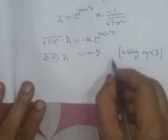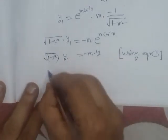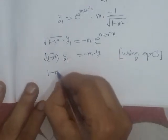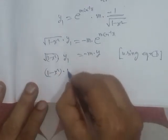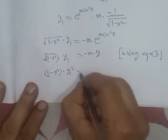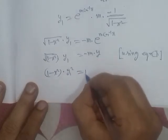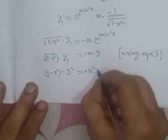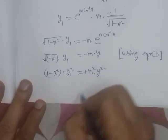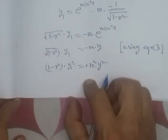Squaring both sides, the square root is removed. We get (1 - x²) · y₁² = m² · y². The minus sign becomes positive on squaring. This is our intermediate result, which we will now differentiate.